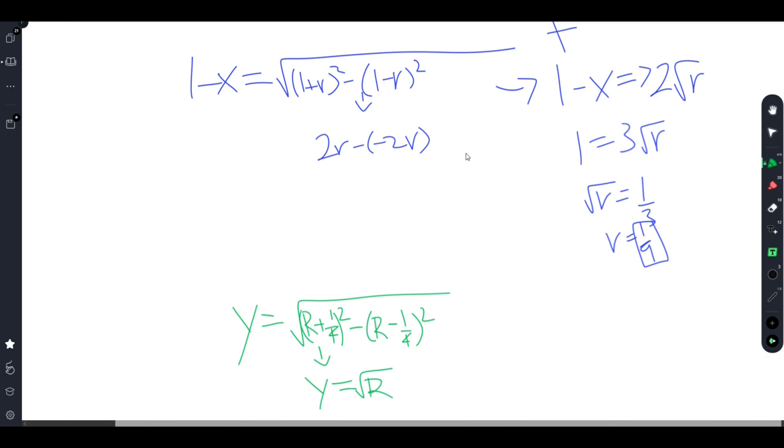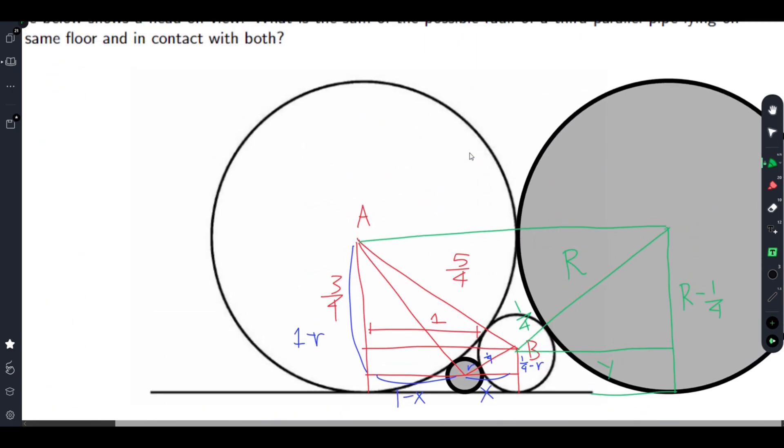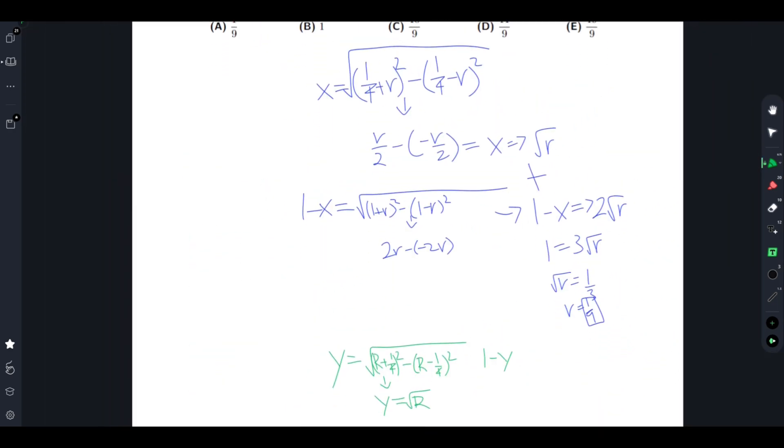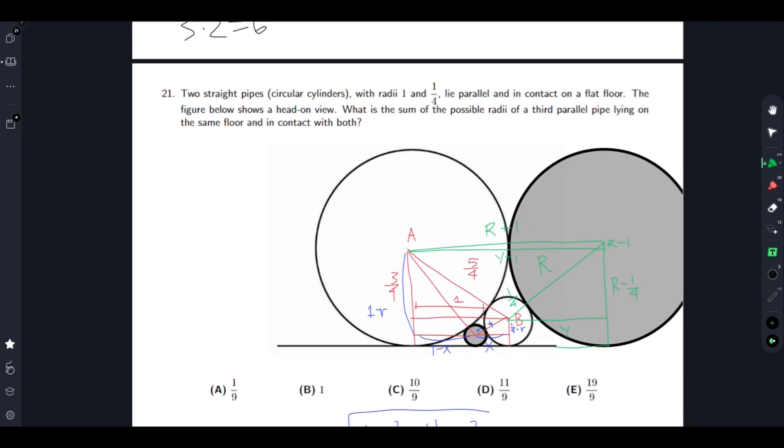Now for this bigger one. We can draw this line right here. And well we have r minus 1 here. This diagonal is y plus 1. Keep in mind this is 1. And the top is r plus 1. So we get 1 minus y is equal to 2 root r. So subtracting the 2 we get 1 is equal to root r. So big r is equal to 1.